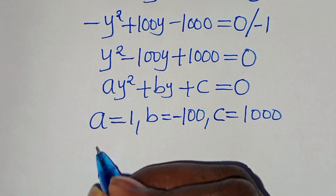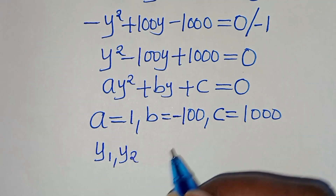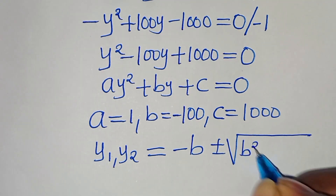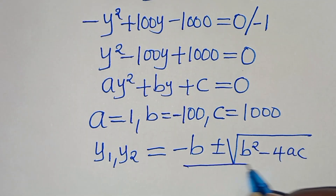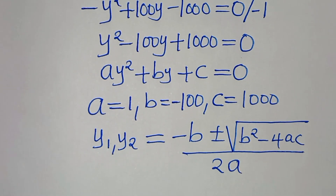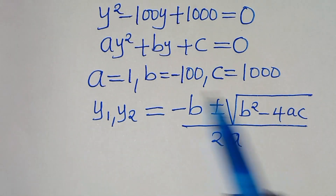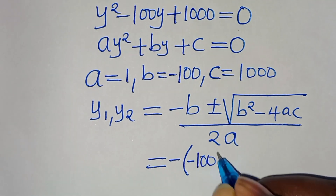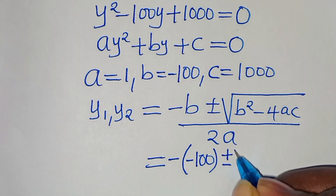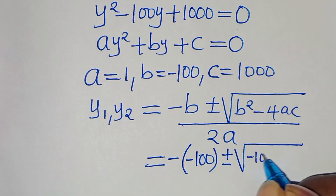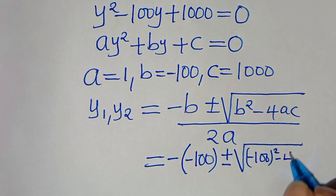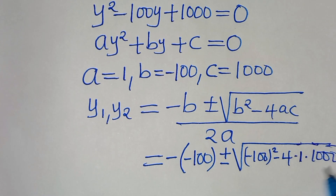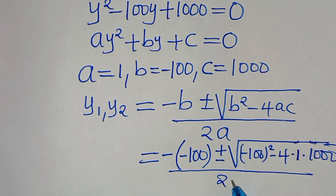The next step is to solve for y1 and y2. We apply the quadratic formula, which is minus b plus or minus the square root of b squared minus 4ac, everything divided by 2 times a. Substituting the values of a, b, and c, we have minus (minus 100) plus or minus the square root of (minus 100) squared minus 4 times 1 times 1000, everything divided by 2 times 1.